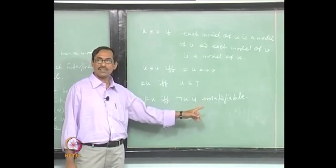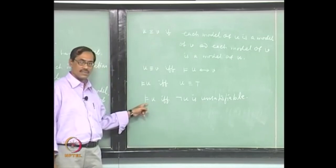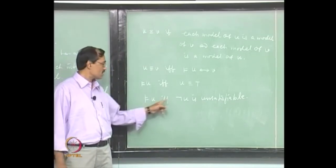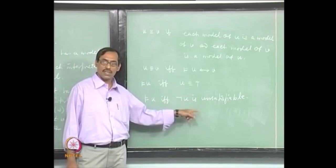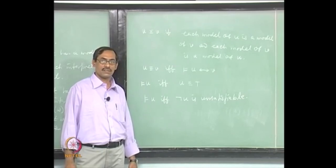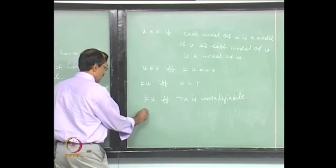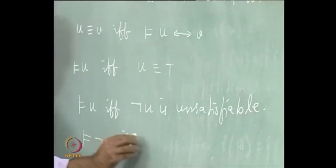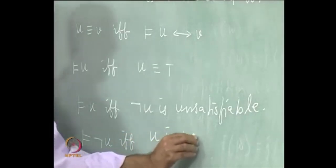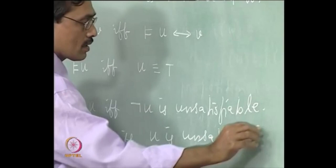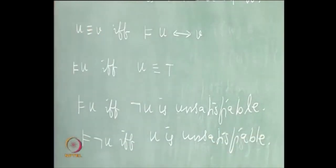Conversely, suppose not-u is unsatisfiable. Now you want to prove u is valid. Start with any interpretation. Since not-u is unsatisfiable, that interpretation evaluates not-u to 0, so it evaluates u to 1 — it is a model of u. Similarly, you can say: not-u is valid if and only if u is unsatisfiable. Same argument.